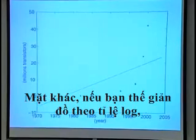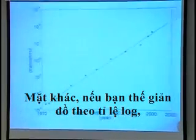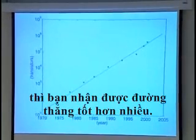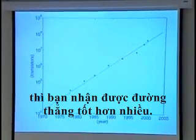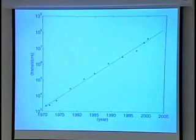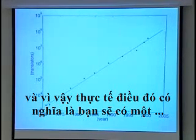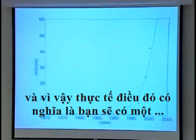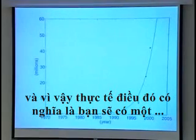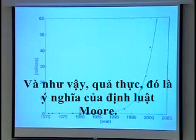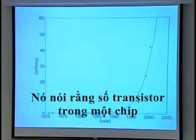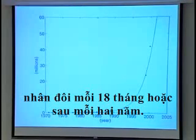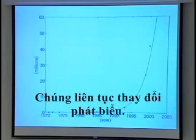On the other hand, if you plot the diagram in a log scale, so the log of the number of transistors as a function of time, then you get a much better line. And so in fact, that means that you had an exponential relation between the number of transistors and time. And so actually, that is what Moore's law says. It says that the number of transistors on a chip doubles every, depending on the version, every 18 months or every two years. They keep changing the statement.